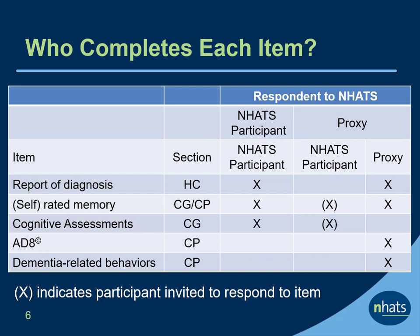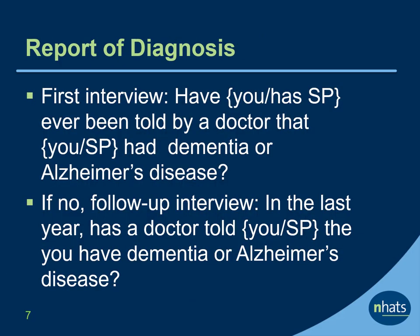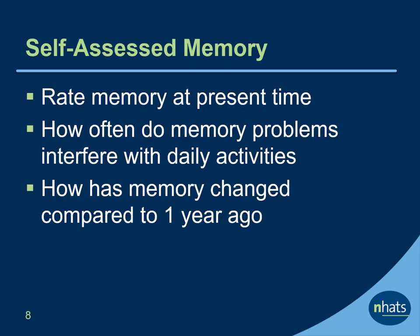Let's take a closer look at each of these items. NHATS participants and proxies are initially asked whether the NHATS participant has ever been told by a doctor that they have dementia or Alzheimer's disease. In follow-up years, the reference period is since the time of the last interview, which in NHATS would be the last year. In the CG section, NHATS participants are asked to rate their memory, how often memory problems have interfered with daily life in the last month, and how their memory has changed compared to a year ago. In the CP section, proxy respondents are asked to rate the NHATS participant's memory.